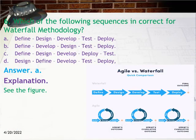Question 6: Which of the following sequences is incorrect for waterfall methodology? A. Define, design, develop, test, deploy. B. Define, develop, design, test, deploy. C. Define, design, develop, deploy, test. D. Design, define, develop, test, deploy. Answer: A — Define, design, develop, test, deploy. Explanation: See the figure.